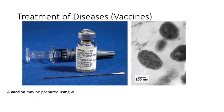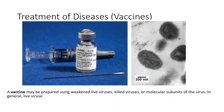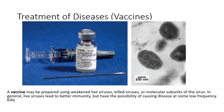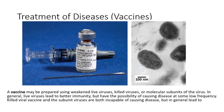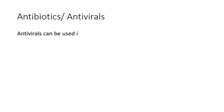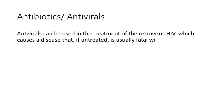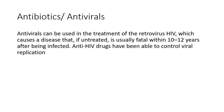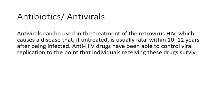A vaccine may be prepared using weakened live viruses, killed viruses, or molecular subunits of the virus. In general, live viruses lead to better immunity, but have the possibility of causing disease at some low frequency. Killed viral vaccines and subunit vaccines are both incapable of causing disease, but in general lead to less effective or long-lasting immunity. Antivirals can be used in the treatment of the retrovirus HIV, which causes a disease that, if untreated, is usually fatal within 10–12 years after infection.